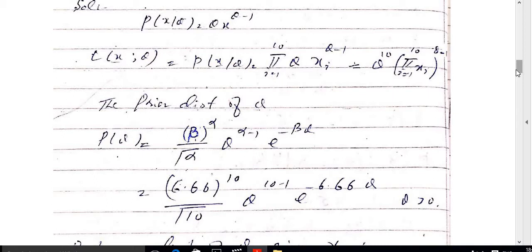The prior distribution of theta given in the question is a gamma distribution with parameters alpha and beta. So p(theta) = (beta^alpha / Gamma(alpha)) · theta^(alpha−1) · e^(−beta·theta). Substituting the given values alpha = 10 and beta = 6.66.